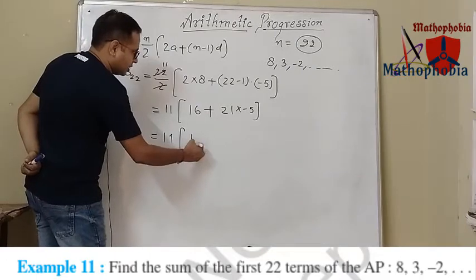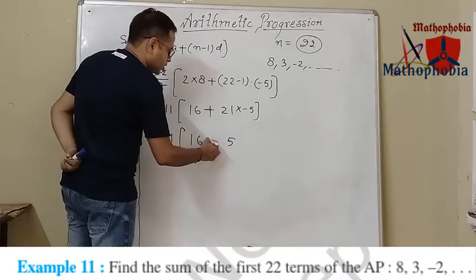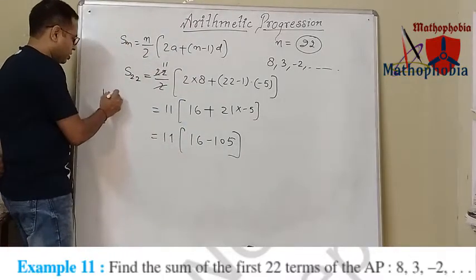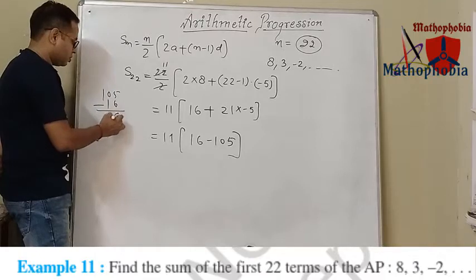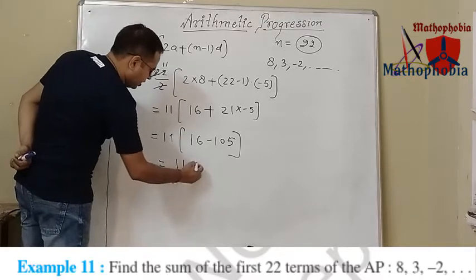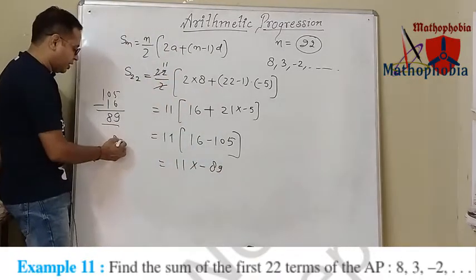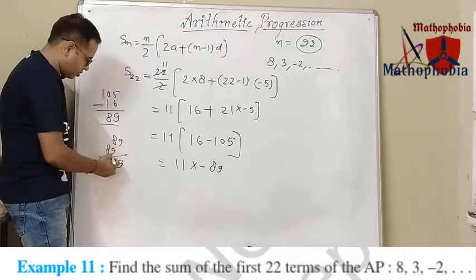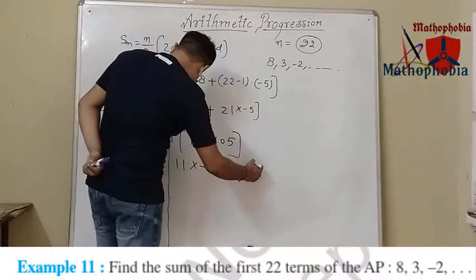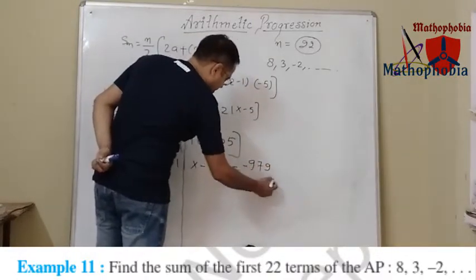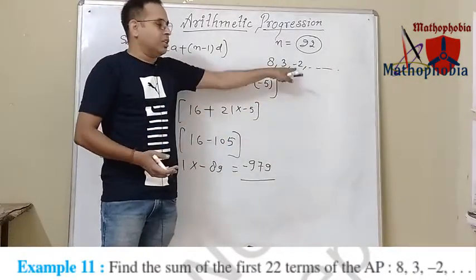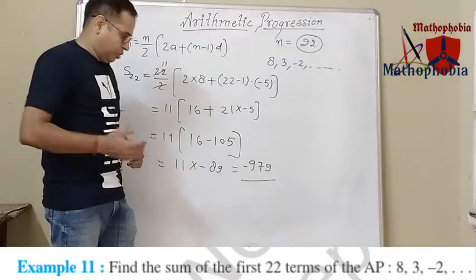So we get 11 times 16 minus 105. We subtract 16 from 105 to get 89. So we get 11 into minus 89. And 89 into 11 gives 979. So S22 equals minus 979. This is the sum of 22 terms of this arithmetic progression. I hope you have understood. Let's move on to the next one.